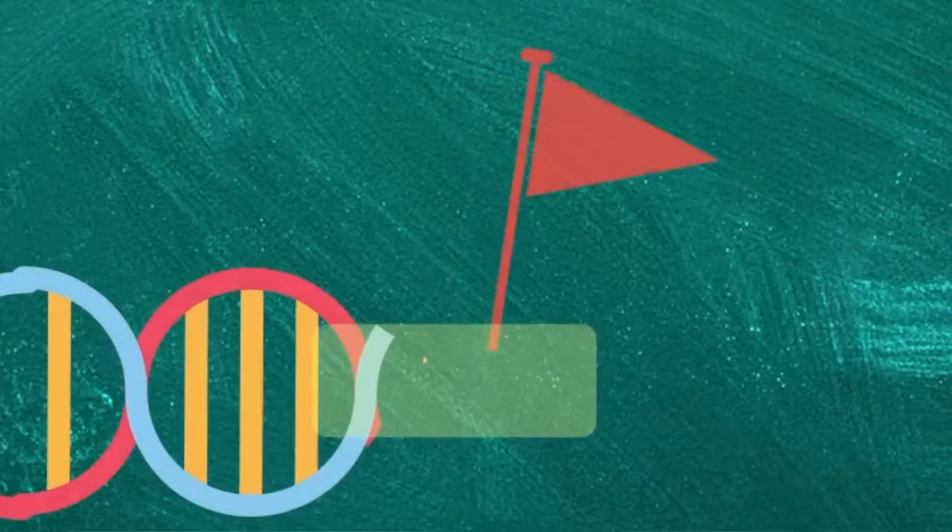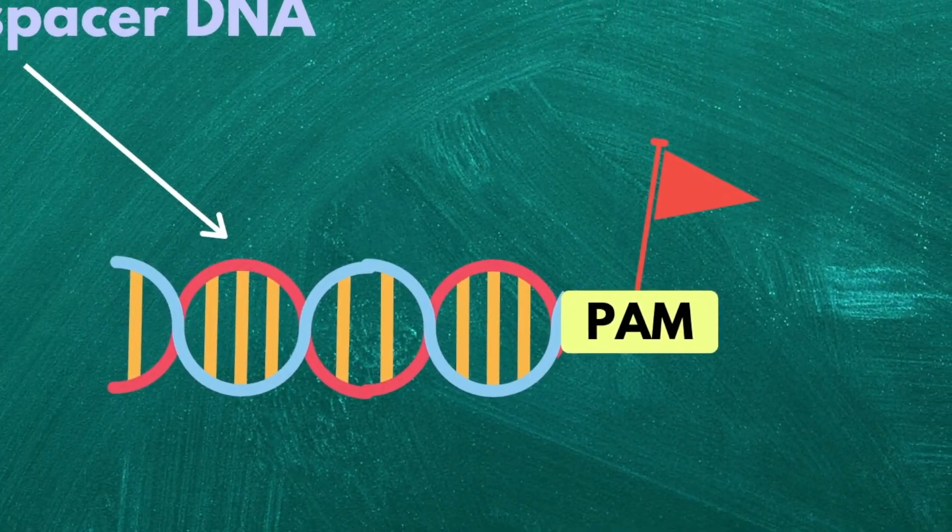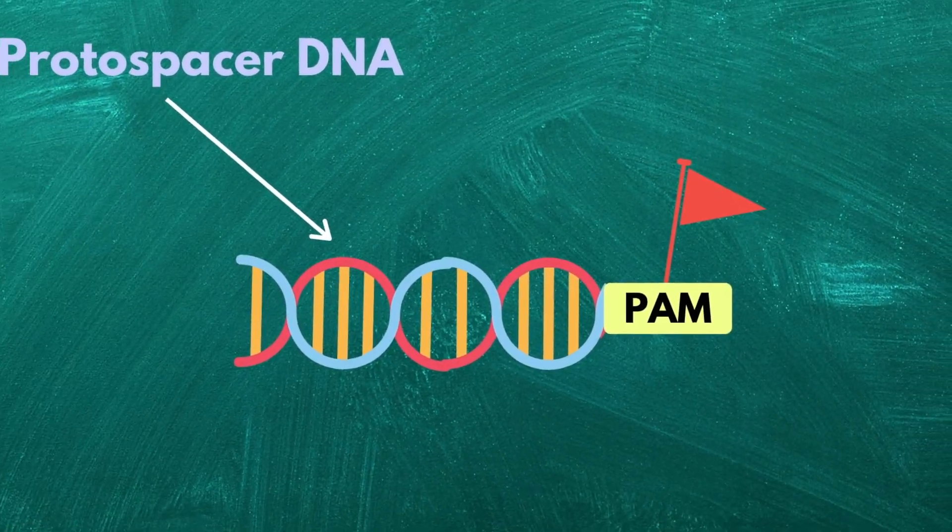But there's a catch. How does the Cas9 complex distinguish between the foreign DNA and the CRISPR locus if both DNAs are the same? This is where we introduce something called PAM. PAM stands for protospacer adjacent motif. It's a series of nucleotides that comes after the protospacer sequence in the foreign genome. You could kind of think of it as a tag on a pair of genes.